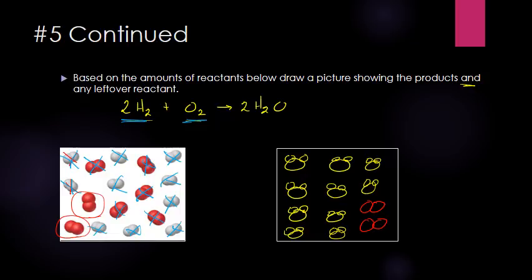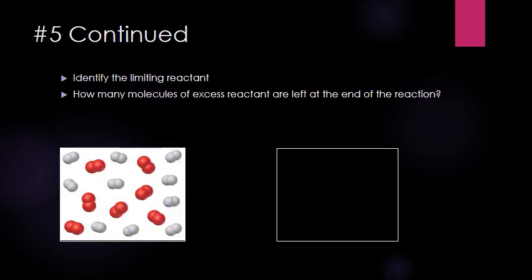Now we're done with that part of number five. The limiting reactant is hydrogen — when we ran out of hydrogen, we couldn't run the reaction anymore. The excess reactant was oxygen and we were left with two oxygen molecules at the end. Problem number five is now complete.